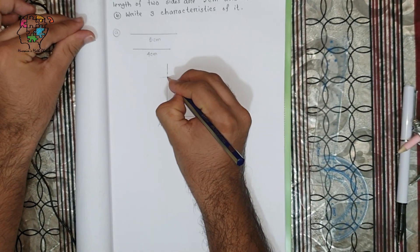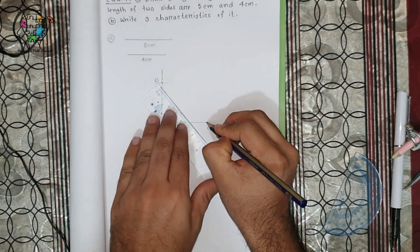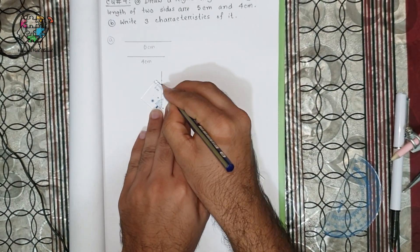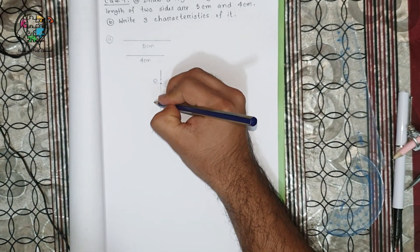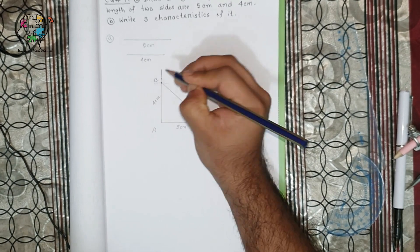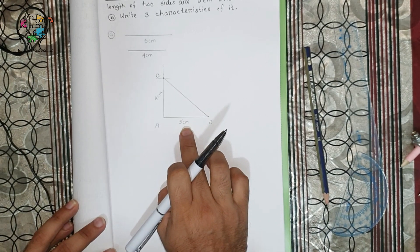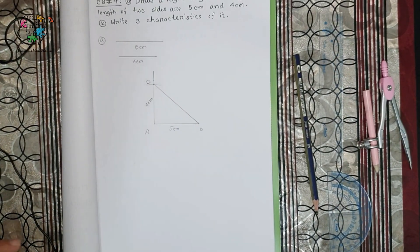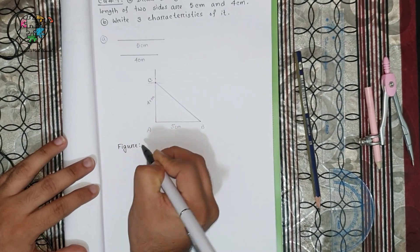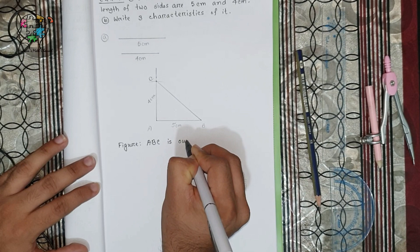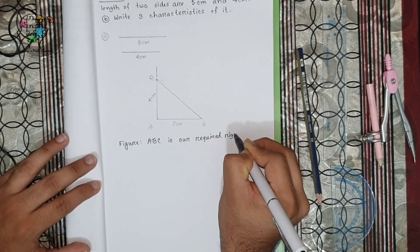Call this point of intersection C. Now if we join B and C, then we will get our required triangle. So this is 5 centimeters and this is 4 centimeters. This is a right-angle triangle where one side is 5 centimeters and another side is 4 centimeters. Now we can write: figure ABC is our required right-angle triangle.